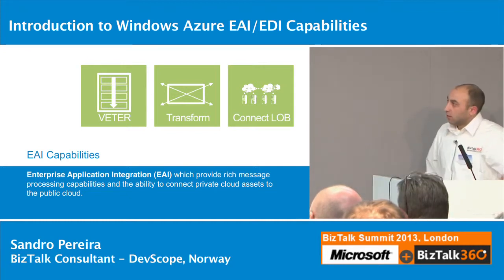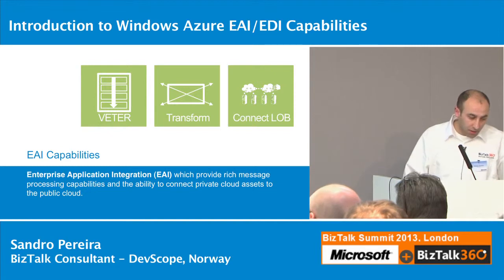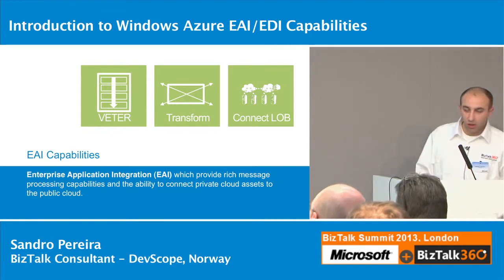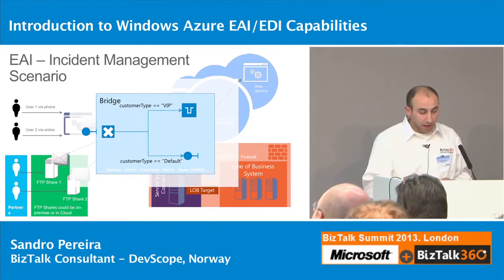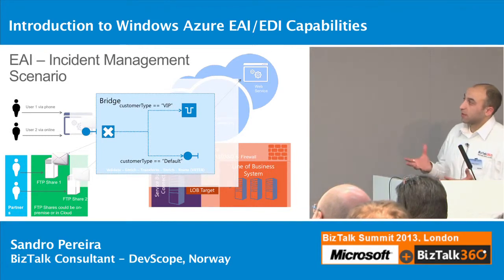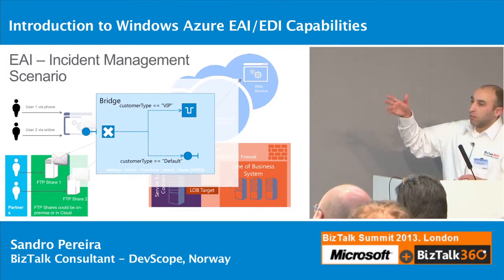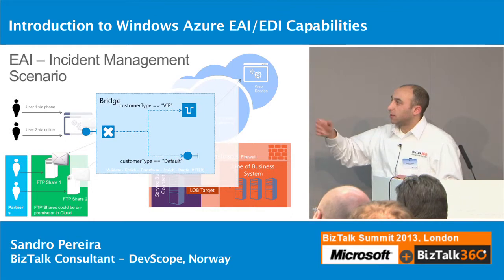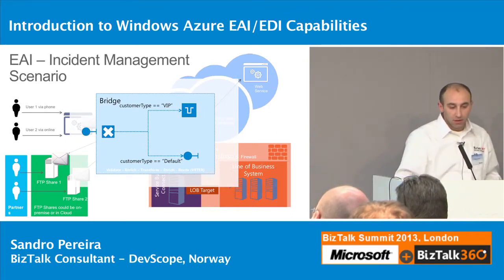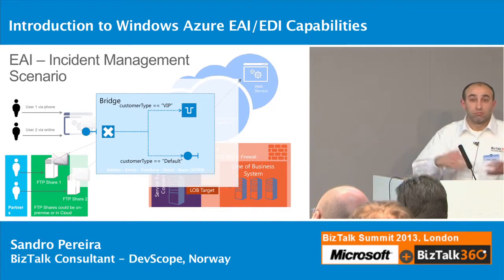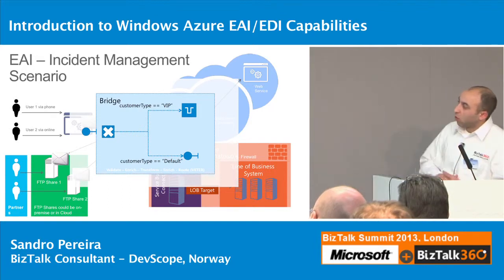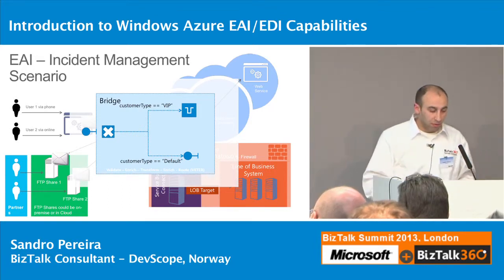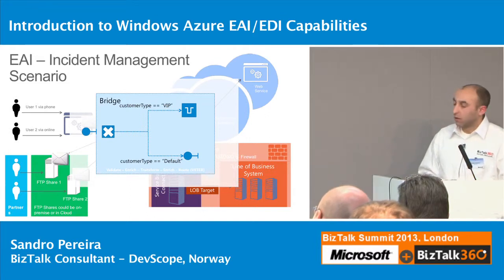This is a common scenario: you have different applications or systems that send messages to a bridge on the cloud on Service Bus. They are processed in the cloud — you can do validation, transformation — and then route to different systems like a web service, send to a queue, or send to your on-premises systems.